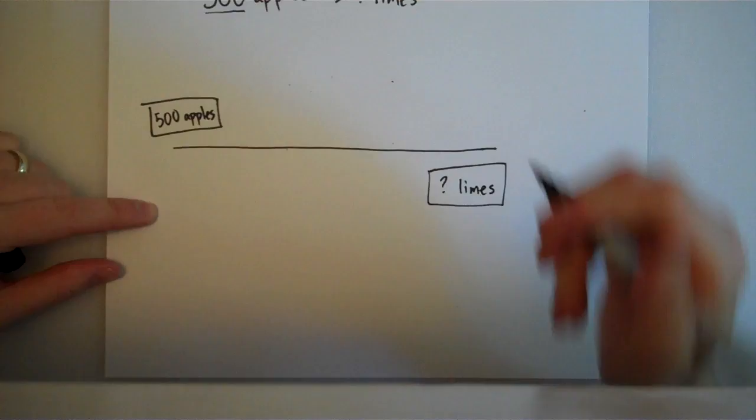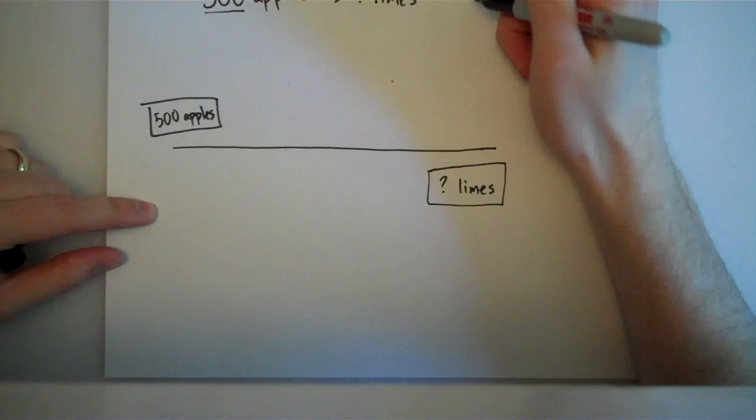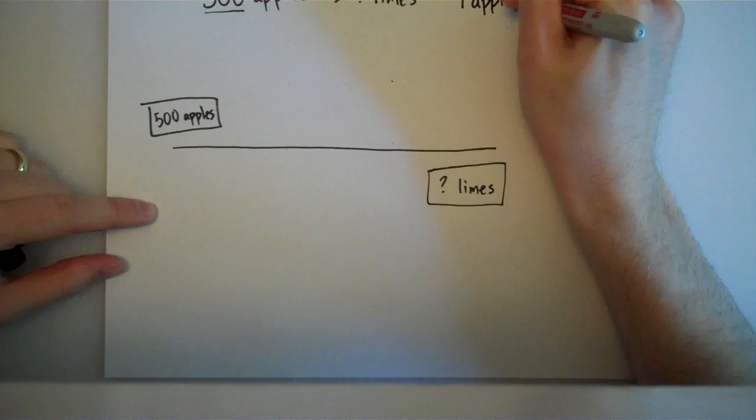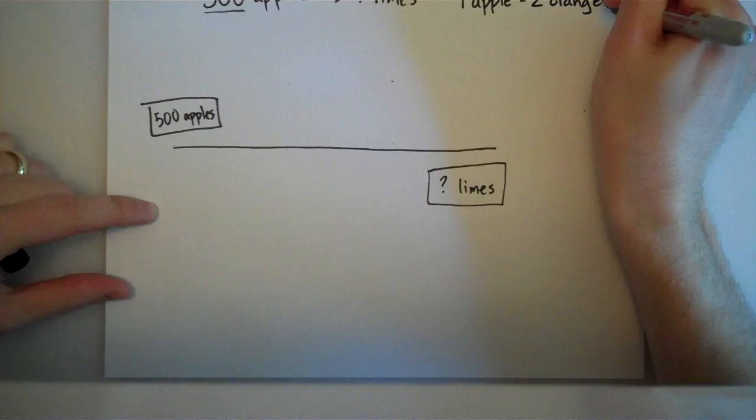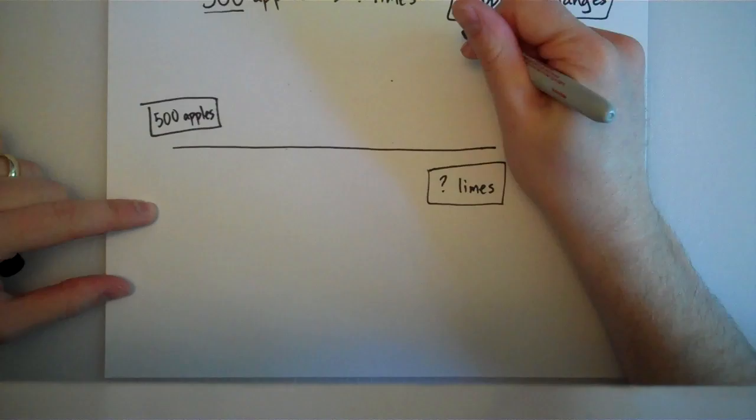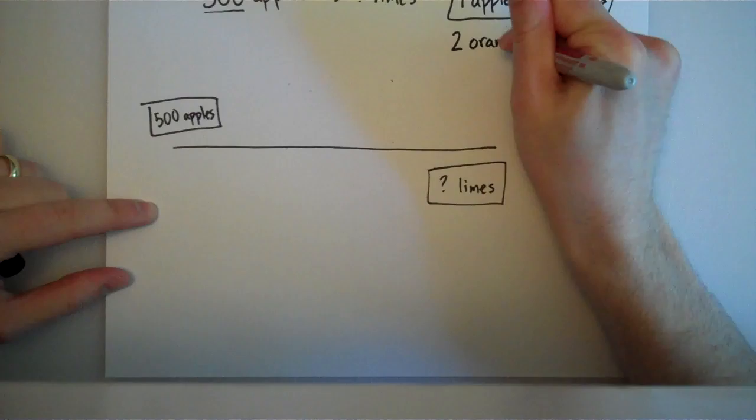So, let's say that you went to the farmer's market and you found out that for every one apple, someone would give you two oranges. Well, that's a pretty good deal. But, you don't want oranges, right? But, you also find out that for every two oranges, someone else might give you three kiwi.